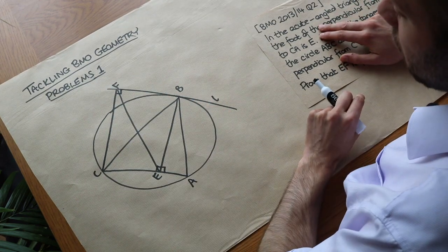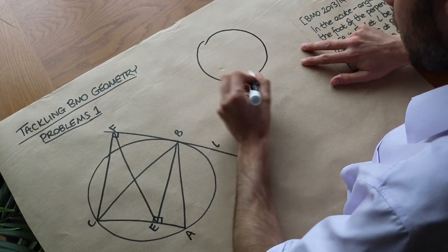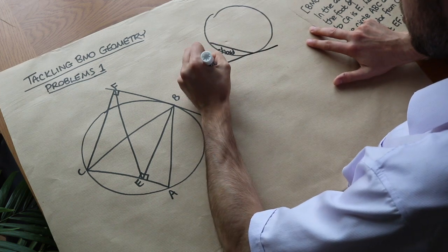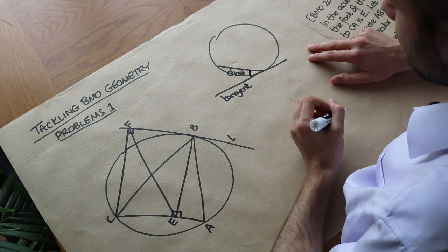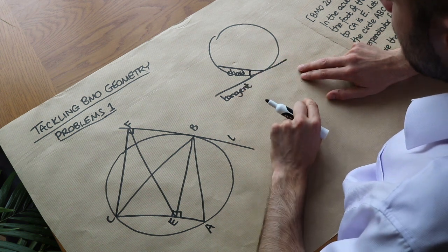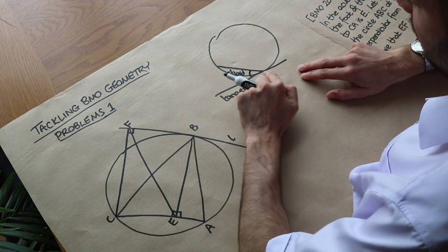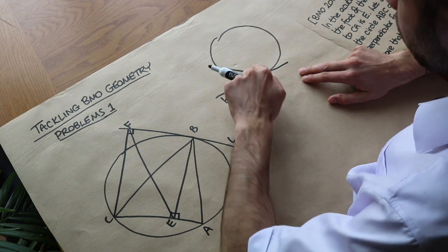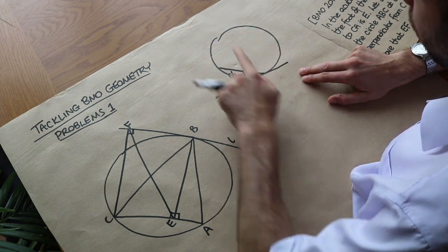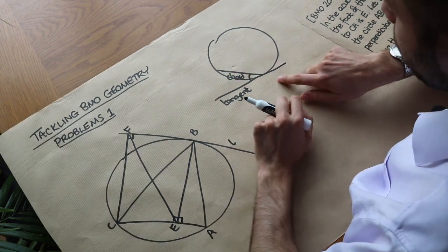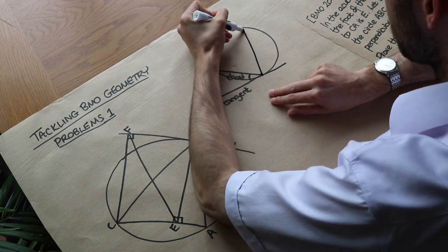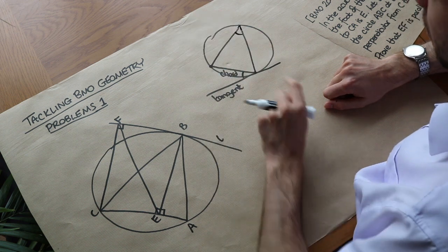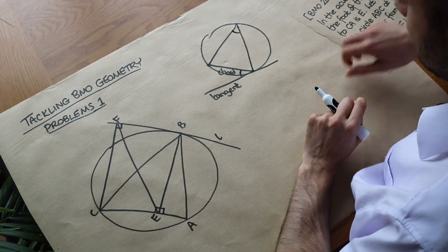So what circle theorems do we know involving tangents? Well, to remind you of a key circle theorem: if you have a chord of the circle and a tangent to the circle - a line that touches the circle - and you have a particular angle between the chord and the tangent, then the angle in what we call the alternate segment is equal to it. The area between a chord and the circumference is known as a segment. The alternate segment is on the other side of the chord from the tangent, and the angle in the segment is found by firing from the two ends of the chord somewhere onto the circumference. The alternate segment theorem states that this angle equals the angle between the chord and the tangent.